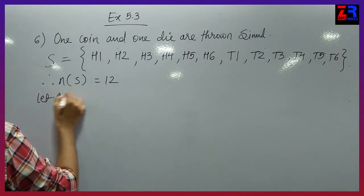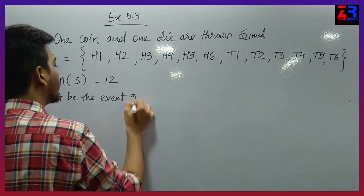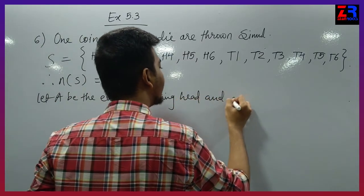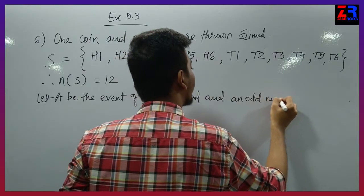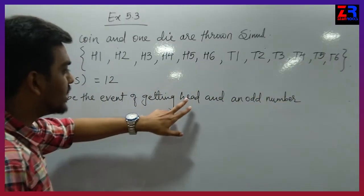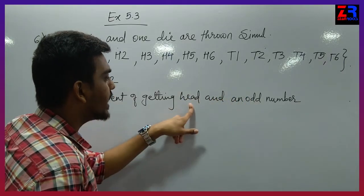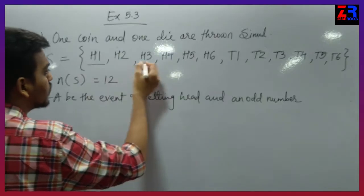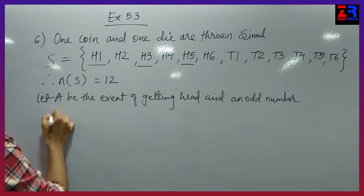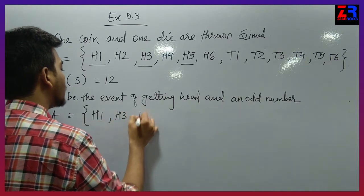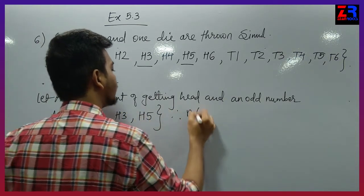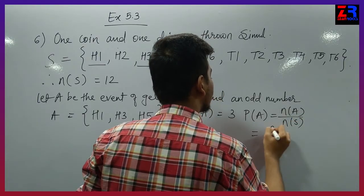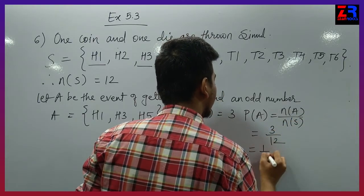Let A be the event of getting head and an odd number. Head with an odd number: 1, 3, and 5 are odd numbers. So A = {H1, H3, H5}. Therefore N of A equals to 3. Probability of A equals to N of A upon N of S = 3 upon 12 = 1 upon 4.